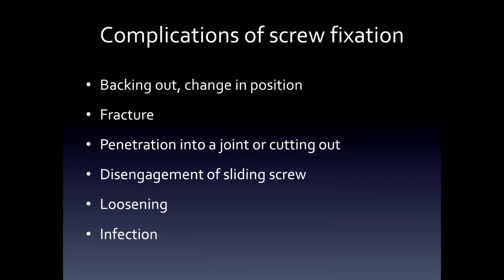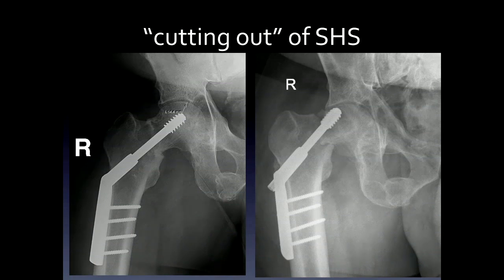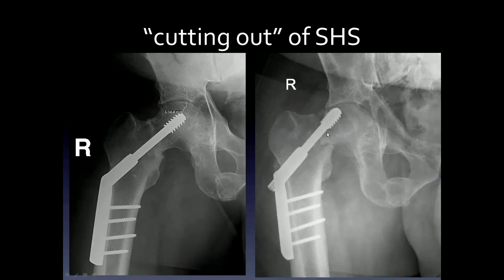Complications of screw fixation include backing out, change in position, fracture, penetration into a joint or cutting out, disengagement of a sliding screw, loosening, and infection. This is an example of cutting out of a sliding hip screw: the picture on the left shows an apparently uncomplicated appearance, but on the right you can see the fracture has collapsed into varus, with a lucency where the screw head used to be, and the screw is now cutting out laterally from the femoral head.